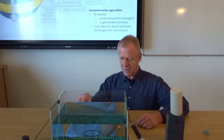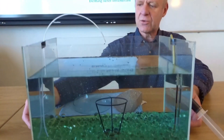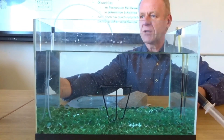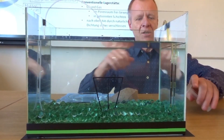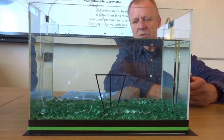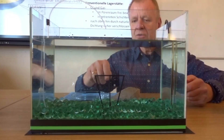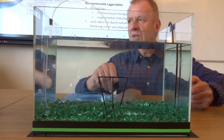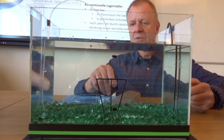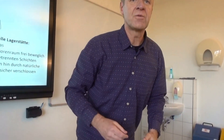We recreated this in our experiment. The black layer down here is the source rock with the organic material, and the glass spheres represent the sandstone. When hydrocarbons are now formed, they are pressed out of the source rock by the overburden, and because the oil and gas are lighter than water, the oil and gas slowly rise in the pores of the rock, as you can see here nicely. Most of the oil or gas comes to the surface this way and evaporates there.